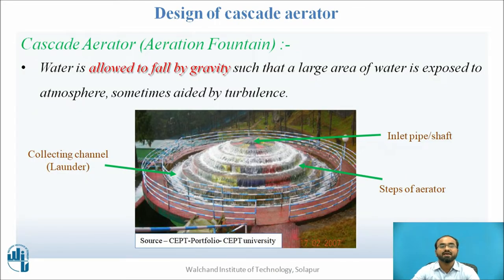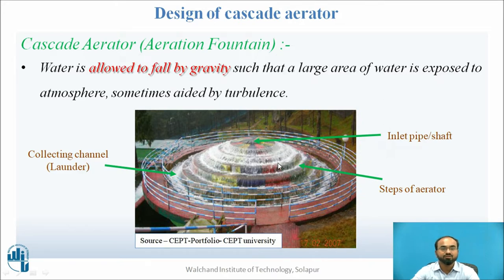So what is a cascade aerator? It is an aerator in which water is allowed to fall freely with the help of gravity, such that a large amount of air is exposed to the atmosphere — sometimes aided by turbulence. There is an inlet shaft through which water enters the aerator system, and the water is pushed and made to fall freely through the steps. After coming down, it is collected in the collecting channel, or what we call a launder, and through the launder the water is taken out from the aerator.